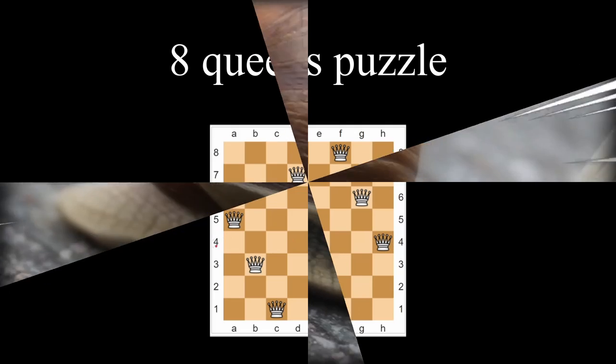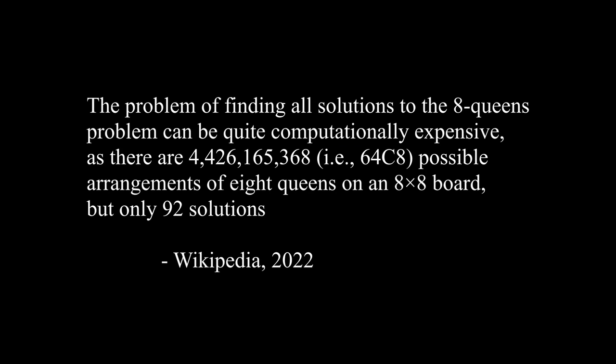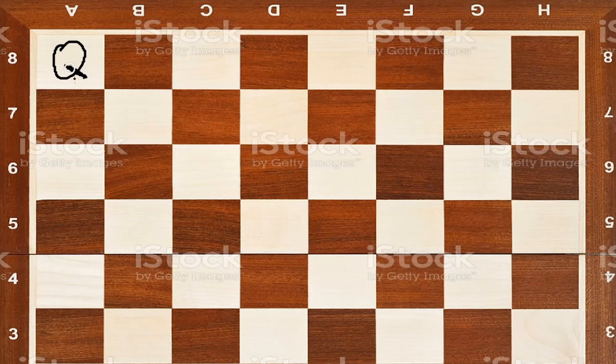The eight queens puzzle is a classic backtracking problem, where eight queens are placed on a chess board such that none of them are attacking each other. The problem is that there are a ton of ways to arrange the eight pieces. Starting to sound kind of familiar, huh? Well, suppose our algorithm is going to start placing queens in the left column A going down. We put our first queen in square A8 and our second queen in square A7.